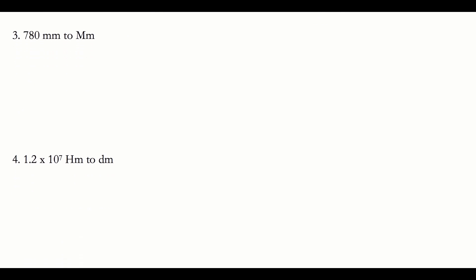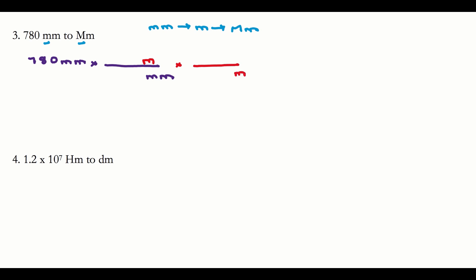For number three, both of my units have prefixes, so I need to be careful — this will be a two-step problem. I'll first convert from millimeters into meters, since I know that relationship, and then from meters into megameters. Starting with my given — 780 millimeters — I put millimeters on the bottom, meters on top first, and then get out of meters into megameters. From the table: one millimeter is 10 to the negative third meters, and one megameter is 10 to the sixth meters.